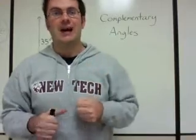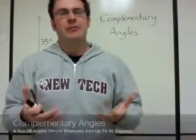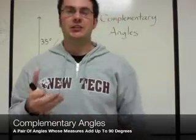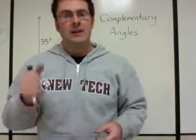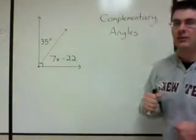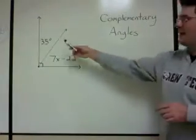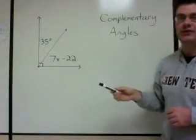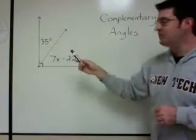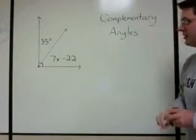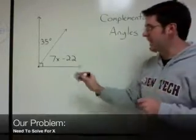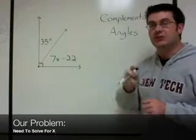First let's take a look at Complementary Angles. Complementary Angles are just two angles whose measures add up to 90 degrees. Simple enough, right? Let's take a look at an example problem here on the board. We have two Complementary Angles here on the board: 35 degrees and 7x minus 22. Now our problem is we have to solve for x.